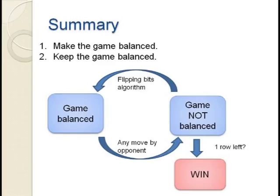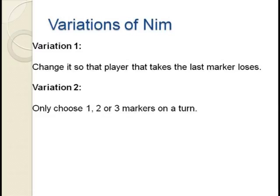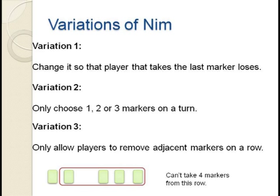There are variations of NIM that are more difficult to analyze, but similar in flavor. For instance, you could change the game so that the last person to take a marker loses. Another variation only allows taking at most 1, 2, or 3 markers from a row. And yet another only allows you to select adjacent markers, so choosing markers in the middle of a row would split it into two groups.